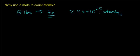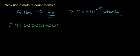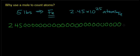And just to give you an idea of how large that number really is, 2.45 times 10 to the 25th is a 2 with 25 digits to the right of it. So if I can actually write it out accurately, it would be 2, 4, 5, followed by zeros, making 25 digits total. In this case, atoms of iron.